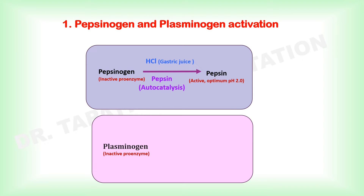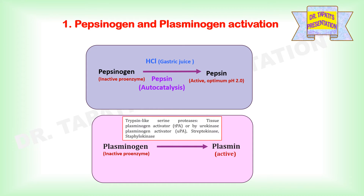Plasminogen is converted to plasmin either by tissue plasminogen activator or by urokinase plasminogen activator, which are two closely related trypsin-like serine proteases.